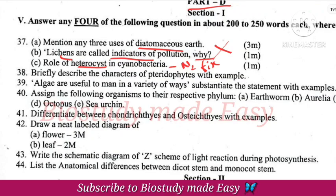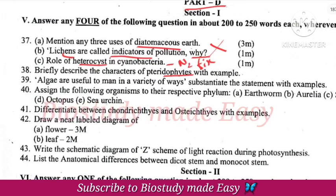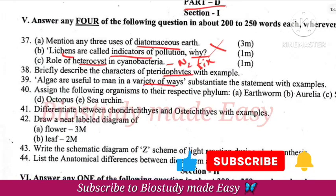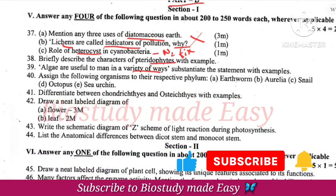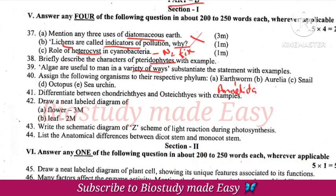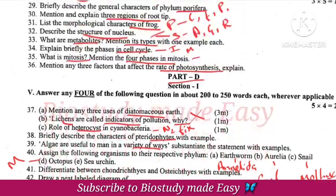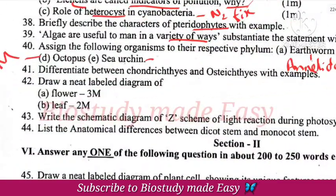Describe characters of pteridophytes with example. Economic importance. Earthworm belongs to phylum Annelida. Aurelia belongs to phylum Coelentrata. Snail belongs to Mollusca. Octopus belongs to Mollusca. Sea urchin belongs to Echinodermata.